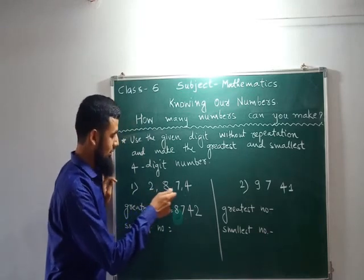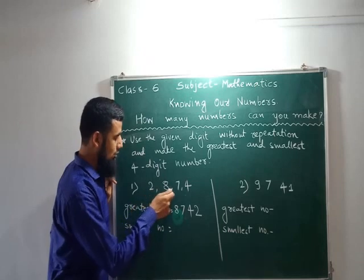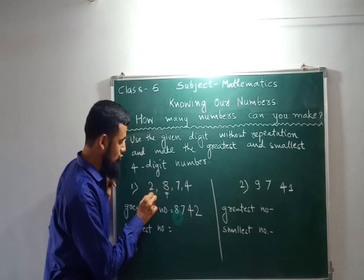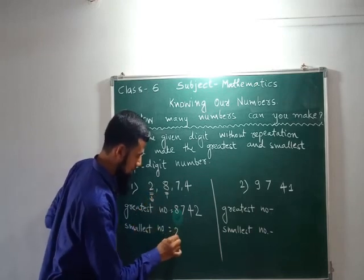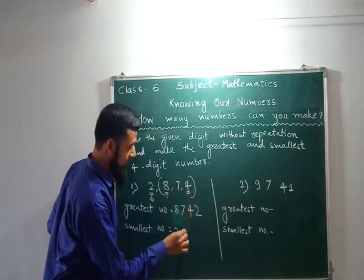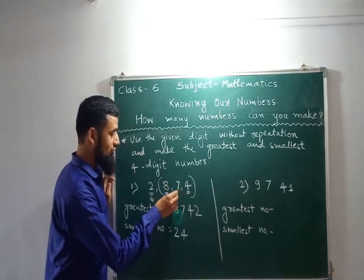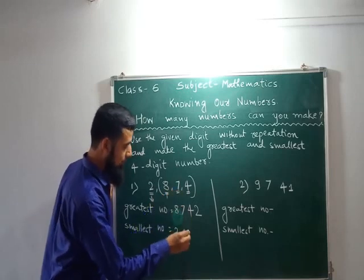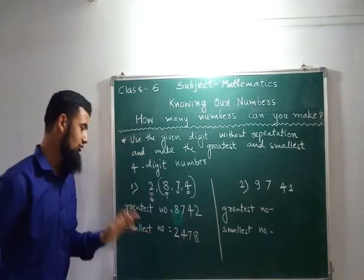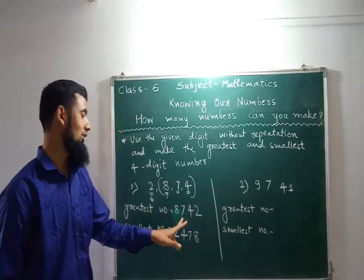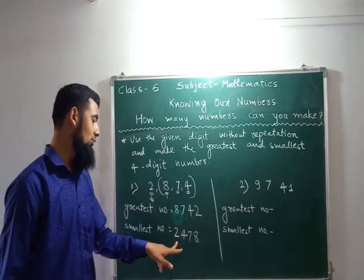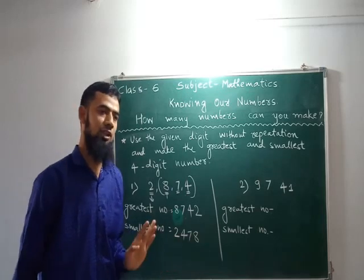What you have to do: to find the smallest number, tell me the smallest number among 2, 8, 7, and 4. So, 2 is the smallest number. Then the remaining smallest is 4, then 7, then 8. So this is the smallest number and this is the greatest number. Greatest number is 8,742 and smallest number is 2,478.